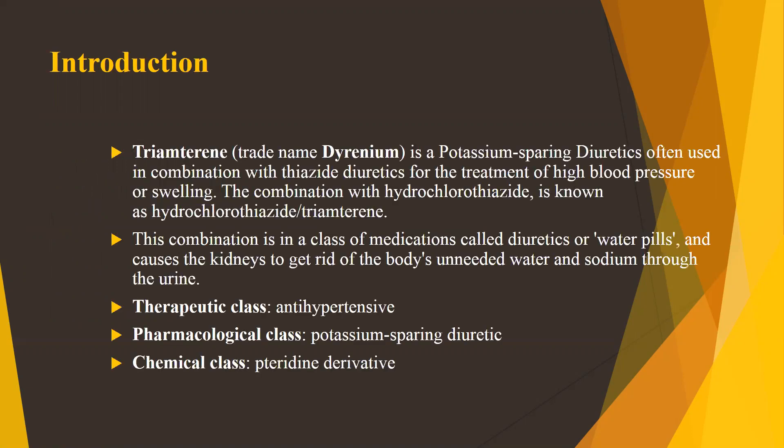So first let's talk about Triamterene in general. This drug comes with the brand name Dyrenium and it is actually a potassium-sparing diuretic, often used in combination with thiazide diuretics for the treatment of high blood pressure or swelling — where there is a certain kind of swelling in which there is fluid accumulation — and these drugs will lead towards removal of that fluid accumulation.